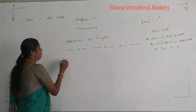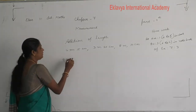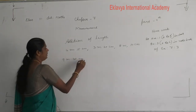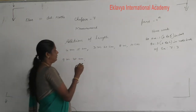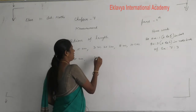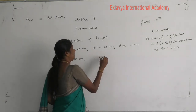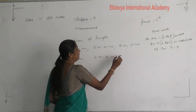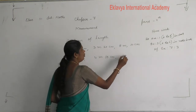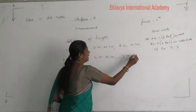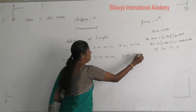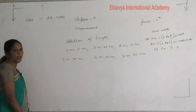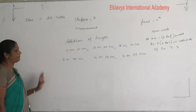Next example: 9 meter 35 centimeter, then 4 meter 10 centimeter, then 2 meter 5 centimeter. Now we add these numbers.